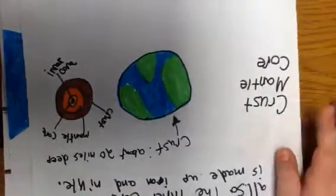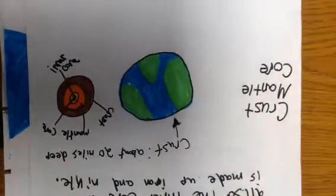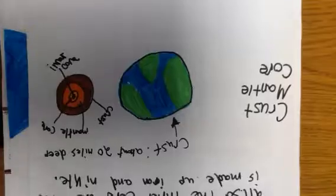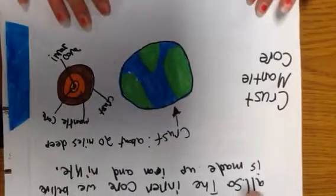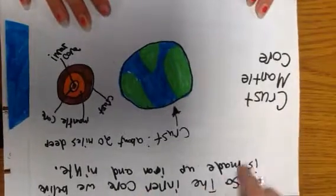Here we have the crust, the mantle, and the core. So the inner core is all made up of iron and nickel.